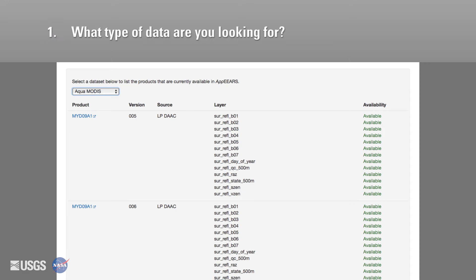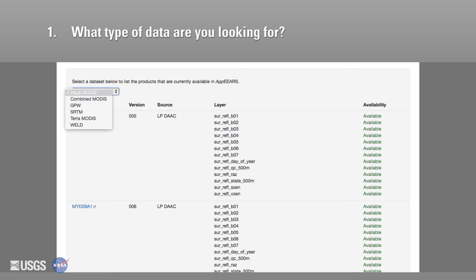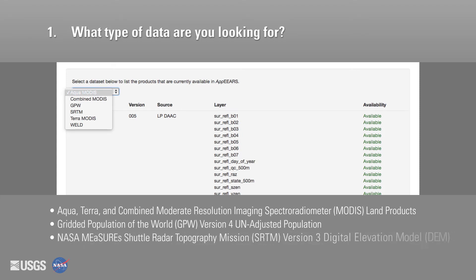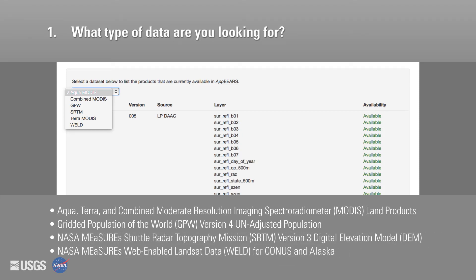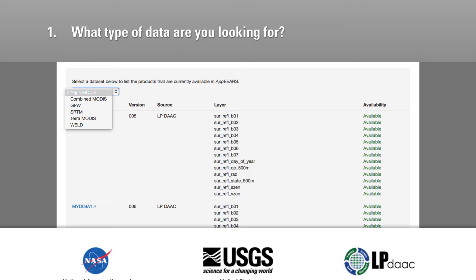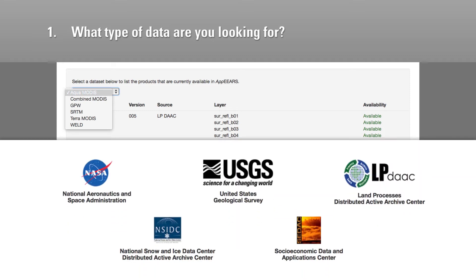What type of data are you looking for? Available data sets include Aqua, Terra, and combined MODIS Land Products. All of our data products include quality data that are included in your request output. Terra and Aqua MODIS snow cover data and the GPW data are provided in collaboration with the National Snow and Ice Data Center and the Socioeconomic Data and Application Center.